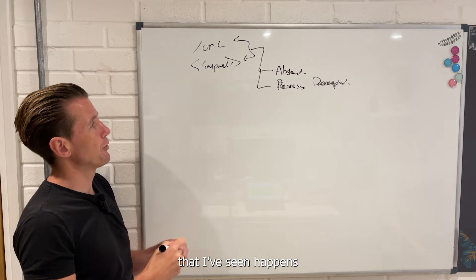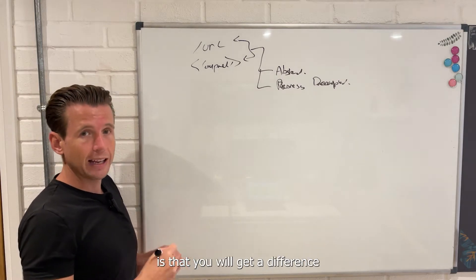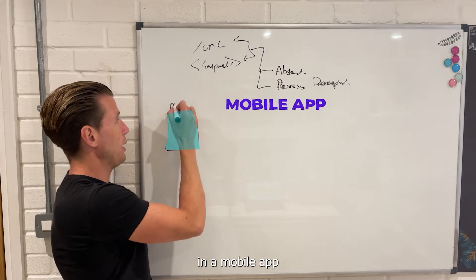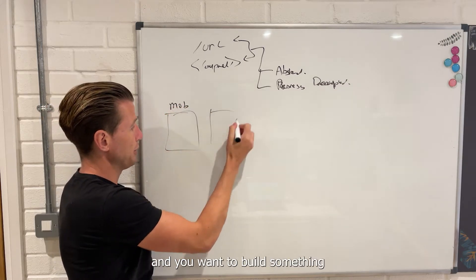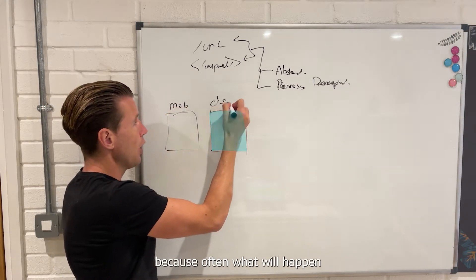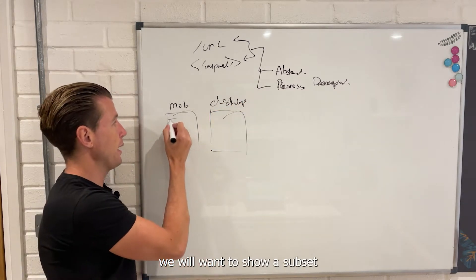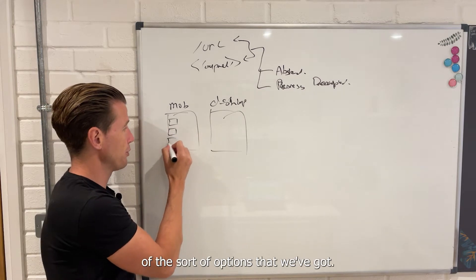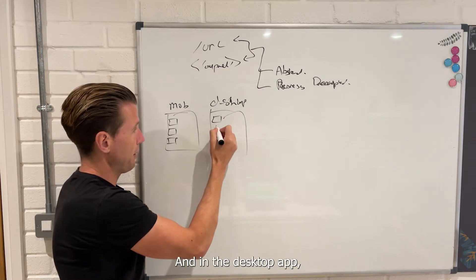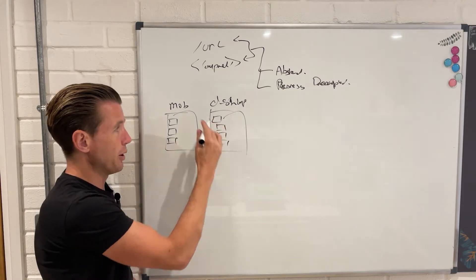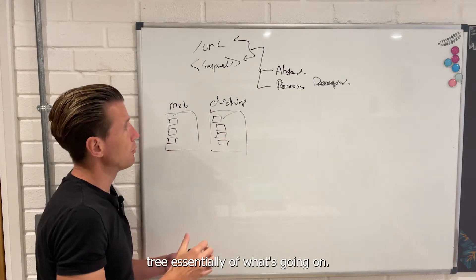One of the problems that I've seen happen time and time again is that you will get a difference between when you want to build something in a mobile app and you want to build something for the desktop. Often what will happen is that in the mobile app, we will want to show a subset of the options that we've got, and in the desktop app, we will want to show a more deep tree essentially of what's going on in our navigation.